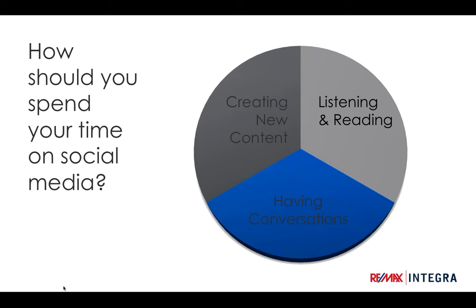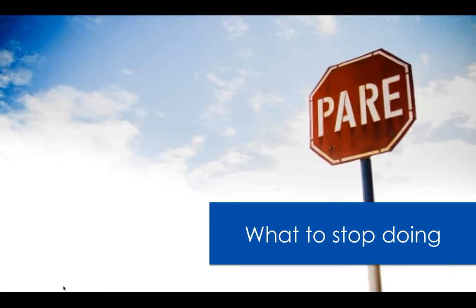I like to show this graph — the rule of thirds — which is probably the simplest way to break down what they should be spending their time on. One third is listening and reading: just observe what other people are talking about, especially if you're connecting with folks in your community. At least another third should be conversation — talking with people and engaging with other people's content. And then about a third of the time creating and posting new, valuable content for the folks paying attention to your social media sites.